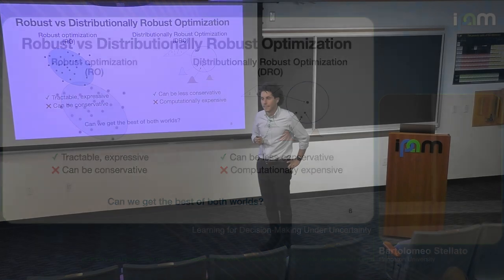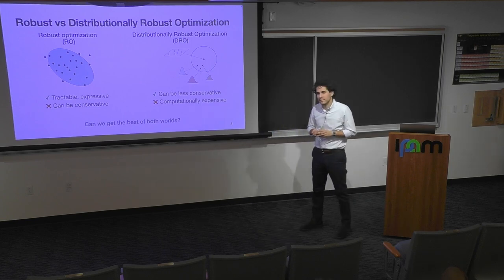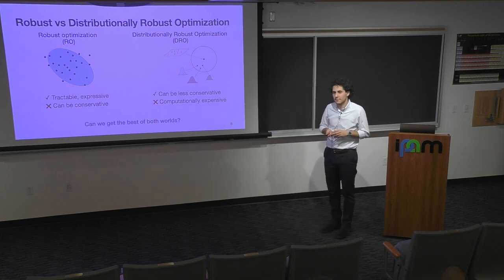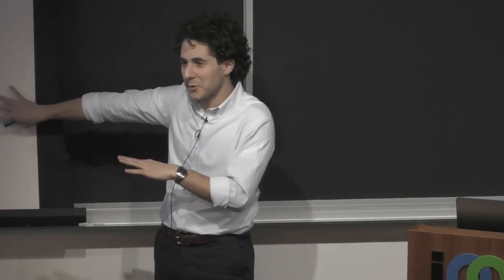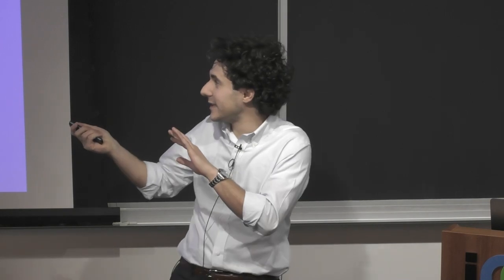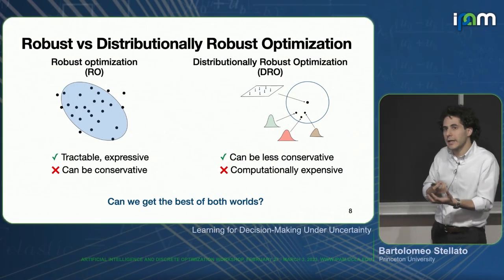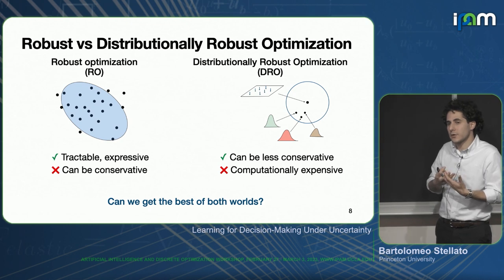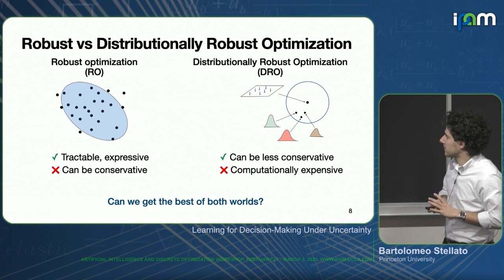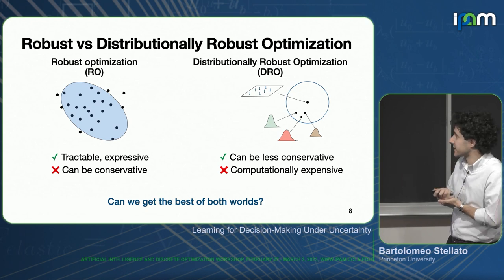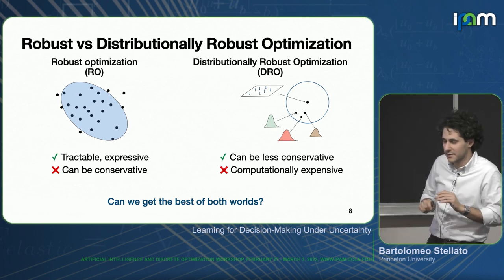An audience member asked whether DRO uses expectation constraints, chance constraints, or something else. For simplicity I will focus on expectation constraints, but you can express also conditional value of risk in terms of expectation, so this can capture upper bounds on the probability of constraint satisfaction. I will clarify this in the next couple of slides.